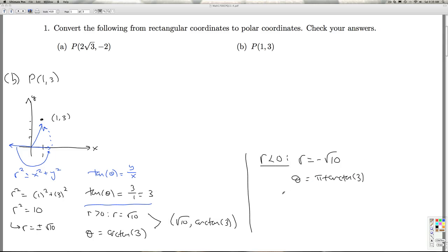then an extra arc tangent 3. So this will give me negative square root 10, pi plus arc tangent 3. And we want to check our answers.